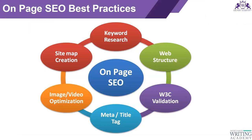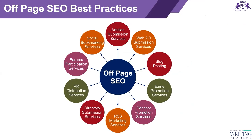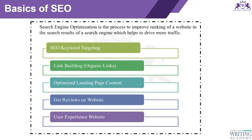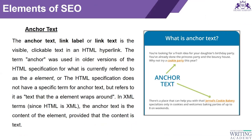On-page SEO is something that directly impacts the ranking - which includes keyword research, the structure and layout of your website, sitemap creation, images and videos that you post, the meta description that you write - everything matters when it comes to on-page SEO. When it comes to off-page SEO, it includes blog posting, promotion services, PR distribution, forum participation, social marketing, social bookmarking services, and article submission services - factors that affect website ranking indirectly.